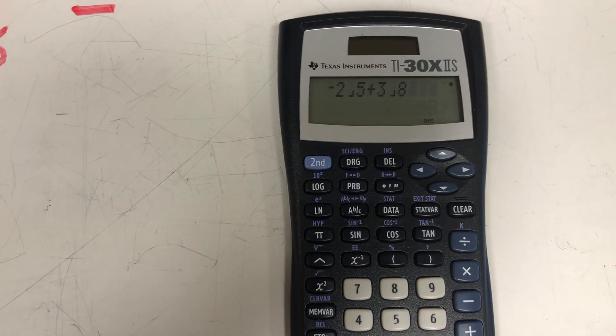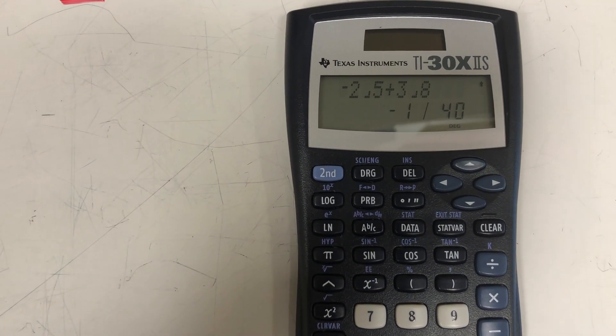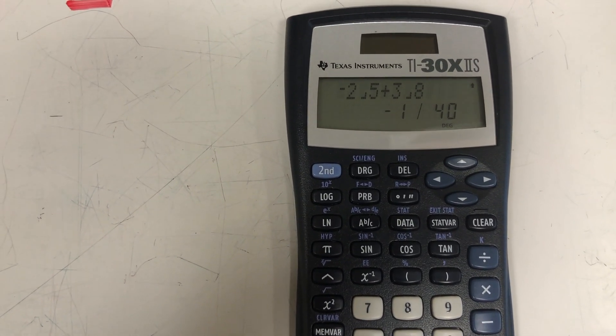And that's all I need to do for this answer. So I'm going to go ahead and type in my answer and I get negative one-fortieth. And then I could write that down as my answer.